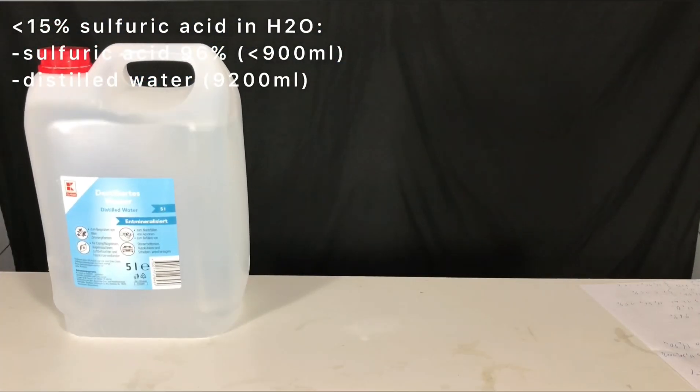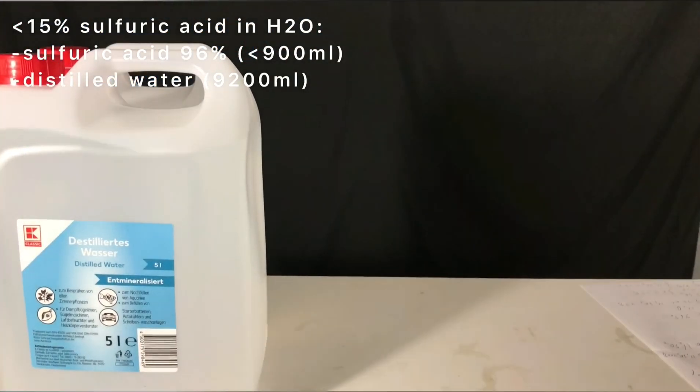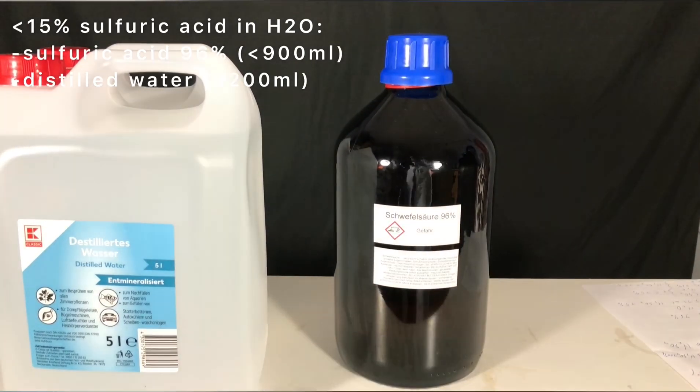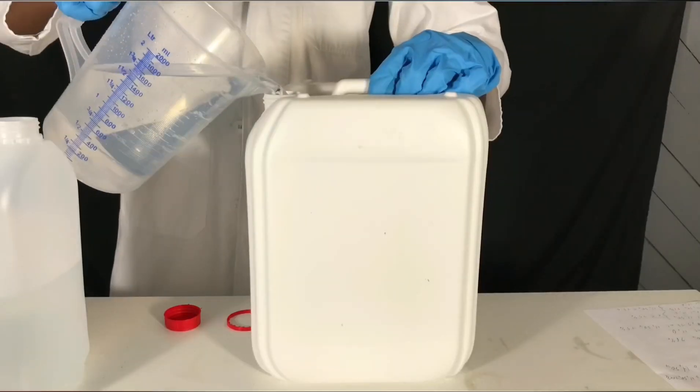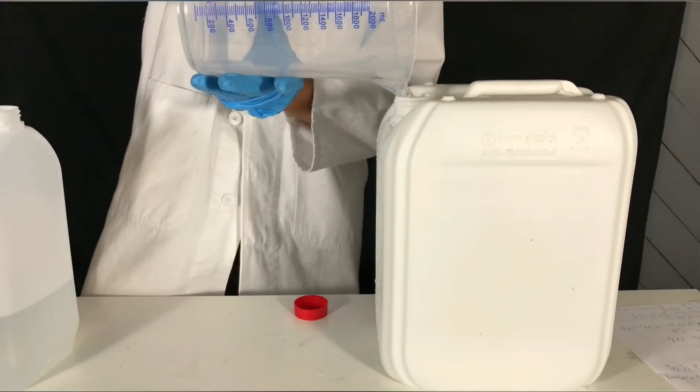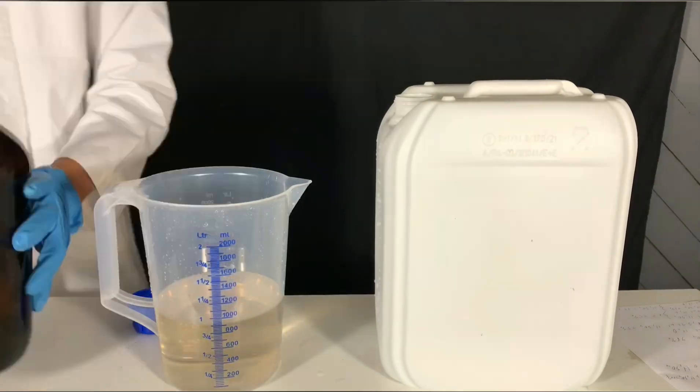Afterwards, a 15% solution of sulfuric acid in water was prepared. To do this, less than 900 milliliters of 69% sulfuric acid are mixed with 9.2 liters of distilled water. The sulfuric acid was again added slowly.